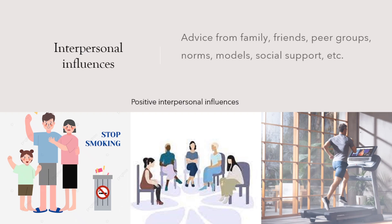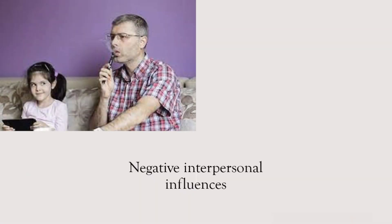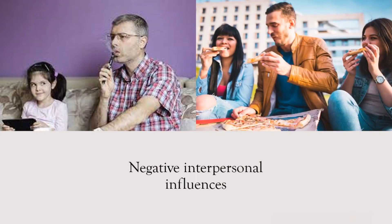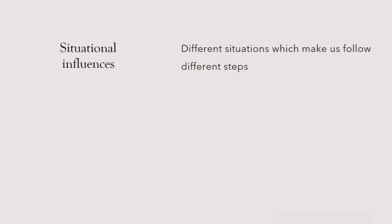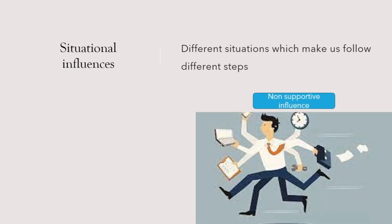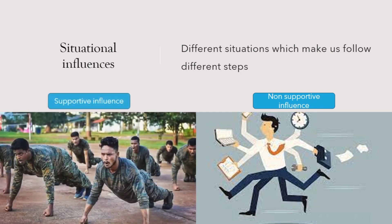Interpersonal influence can work both positively and negatively. If we live in a family where everyone does drugs, smokes, or takes alcohol, with nobody to advise us, or we have a peer group constantly exposing us to unhealthy behaviors, it may result in adopting an unhealthy lifestyle. Next, situational influences — different situations make us follow different steps. Like not having time for exercise is a situational influence. Conversely, someone who works in the army has to exercise daily and keep himself fit by the nature of his work, so the situation automatically influences him to exercise.